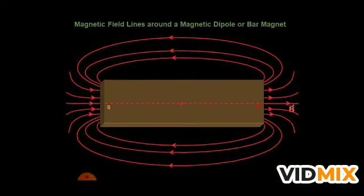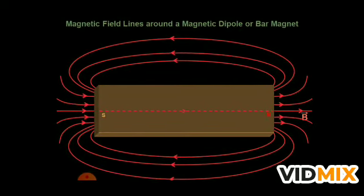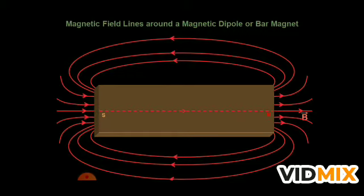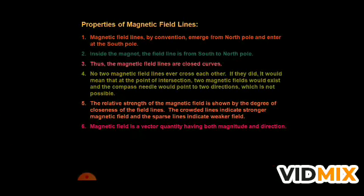Around the magnet, the magnetic field lines are shown in red. The magnet has two poles — North and South. The lines of force originate from the North pole and come towards the South pole, forming loops. So the direction of the magnetic field is from North to South outside the magnet, and from South to North inside the magnet.